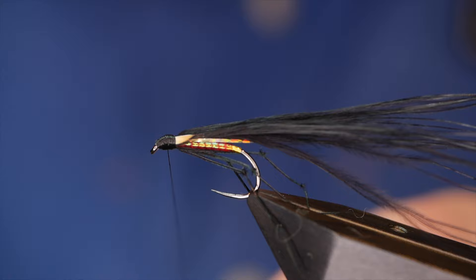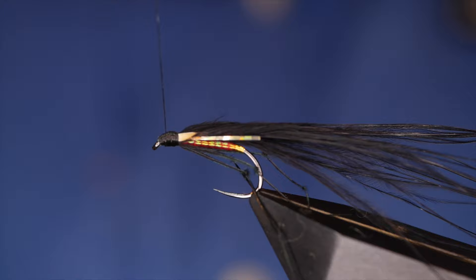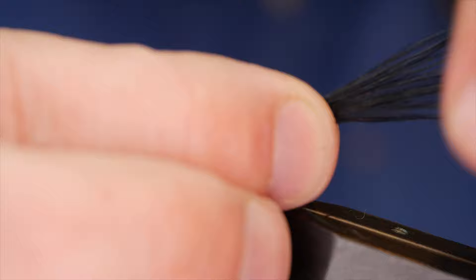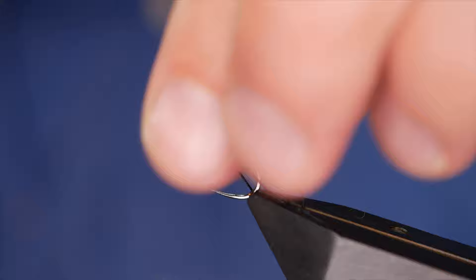Then I can come in with my whip finish tool. At this point, thumb and forefinger in at the marabou, and I can just trim that up. Just use my thumb and forefinger in my left hand damped down to pull everything back.